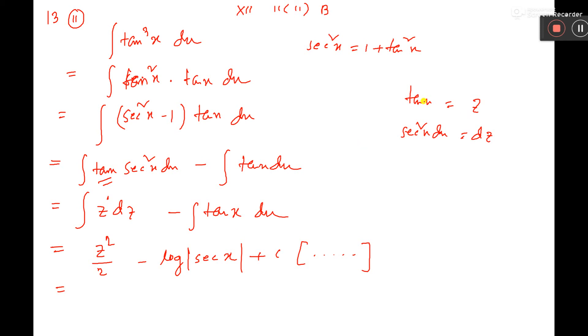Now put the value of z, it is tan. So it will be tan square x by 2 minus log mod sec x plus c. This is the answer, any question?